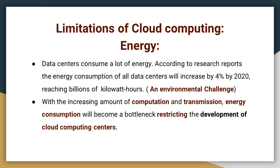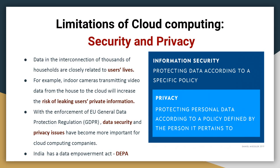With increasing amounts of computation and transmission, energy consumption will become a bottleneck restricting the development of cloud computing centers and services. Another serious limitation which affects each one of us is about security and privacy. Information security is protecting data according to a specific policy, and information privacy is protecting personal data according to a policy defined by the person it pertains to. For example, indoor cameras transmitting video data from a house to the cloud will increase the risk of leaking users' private information. With the enforcement of the European Union's General Data Protection Regulation (GDPR), data security and privacy issues have become more important for cloud computing companies. Even in India, we have a data empowerment act called DEPA.